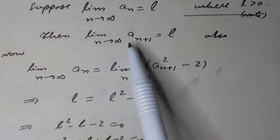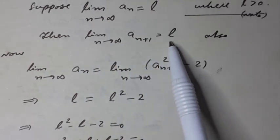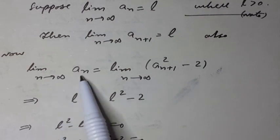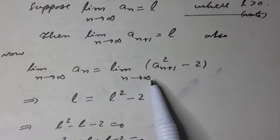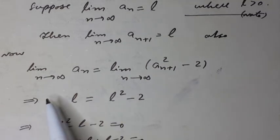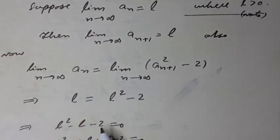Suppose the limit as n tends to infinity of aₙ is equal to l, where l is greater than 0. Then the limit of aₙ₊₁ is also equal to l. Now, taking limits: l is equal to l² minus 2, which can be written as l² minus l minus 2 is equal to 0.